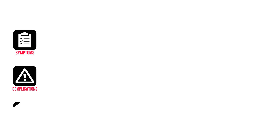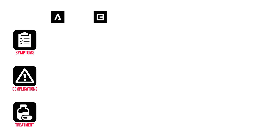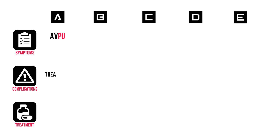When assessing the patient with the sedative toxidrome, this is what you'll typically see. In A: if your patient has a reduced level of consciousness, then the airway is threatened. Apply the triple airway maneuver. If your patient breathes insufficiently, start bagging.